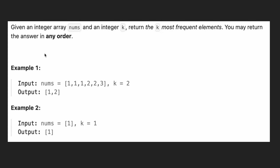Hi everyone, it's Sorkin. Today we have a problem where we are given an integer array nums and an integer k. In this case, we have this nums array and k equals 2. We need to return the k most frequent elements, and we may return them in any order.